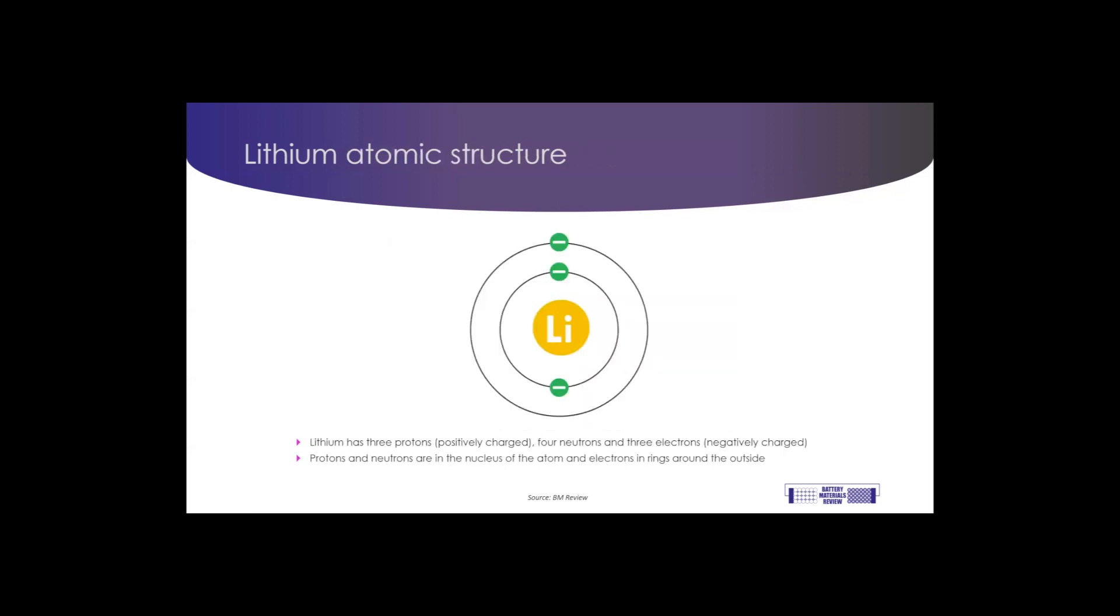If you go back to those old chemistry lessons, the atomic number is the number of protons, or positively charged particles, in the nucleus. Lithium has three, and it also has four neutrons as well, but we won't go into those in any detail. To balance that out, lithium also has three electrons, which are negatively charged.